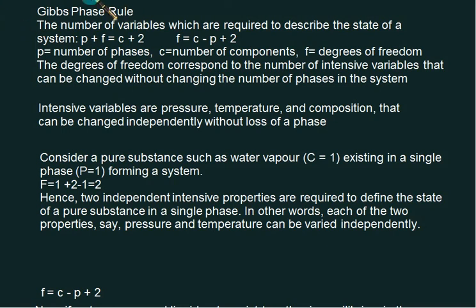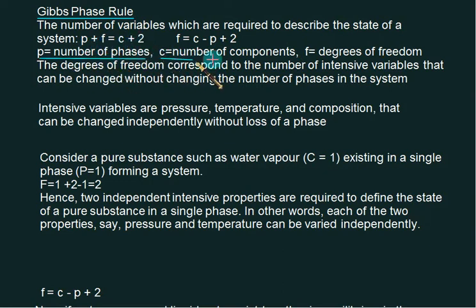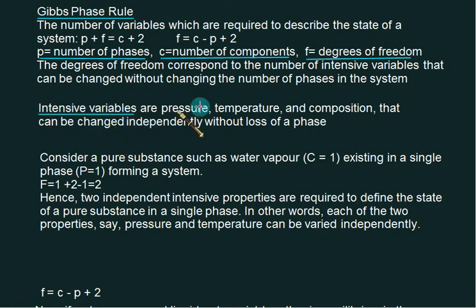To calculate the properties we have to first find out what the phase rule is and the degree of freedom. The phase rule states that the number of variables required to describe the state of a system is given by P plus F equals C plus 2, where P is the number of phases, C is the number of components, and F is the degrees of freedom — meaning how many intensive properties are required to obtain enthalpy, entropy, internal energy, and so on. Intensive variables are pressure and temperature; volume is taken as an extensive variable.